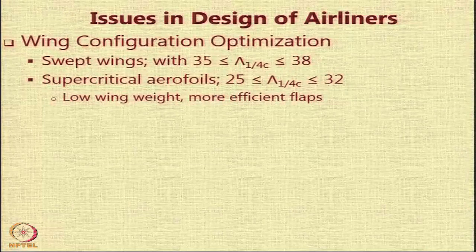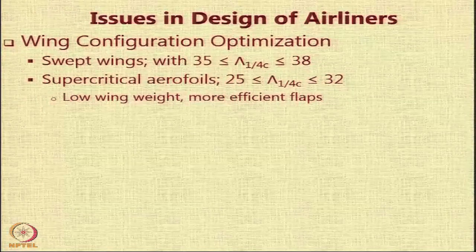Most airliners in this category fly near transonic speeds — Mach numbers of around 0.8. They are going to have swept wings with a sweep angle in a very narrow band, or supercritical aerofoils allowing a slightly lesser sweep angle.